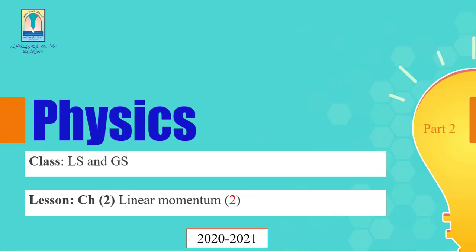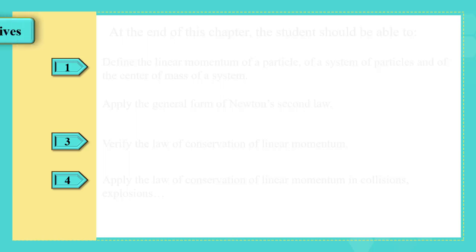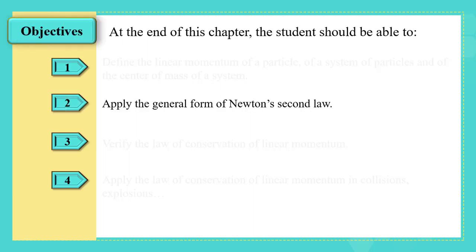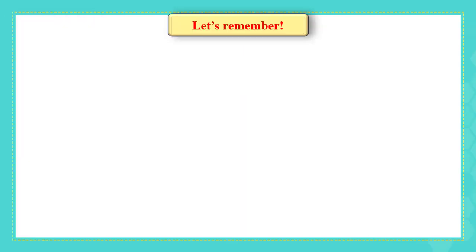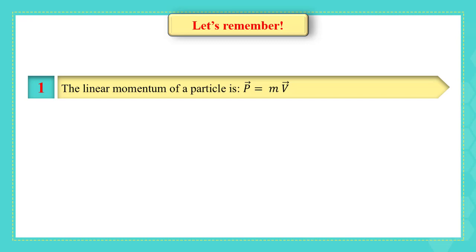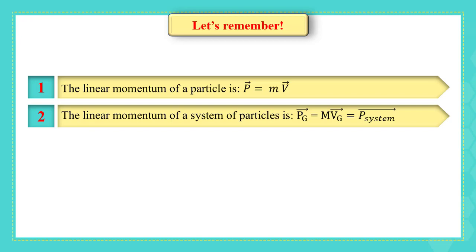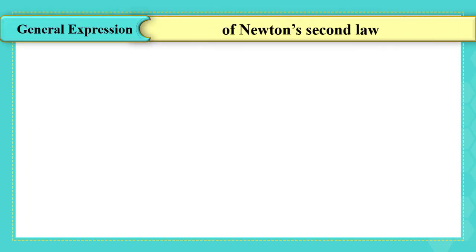This is the second video of the second chapter on linear momentum. At the end of this video you're going to be able to apply the general form of Newton's second law. Let's remember what we took in the first video: the linear momentum of a particle is p vector equals mass times v vector. The linear momentum of a system of particles is p vector g equals m times vg, which equals the linear momentum of the system.